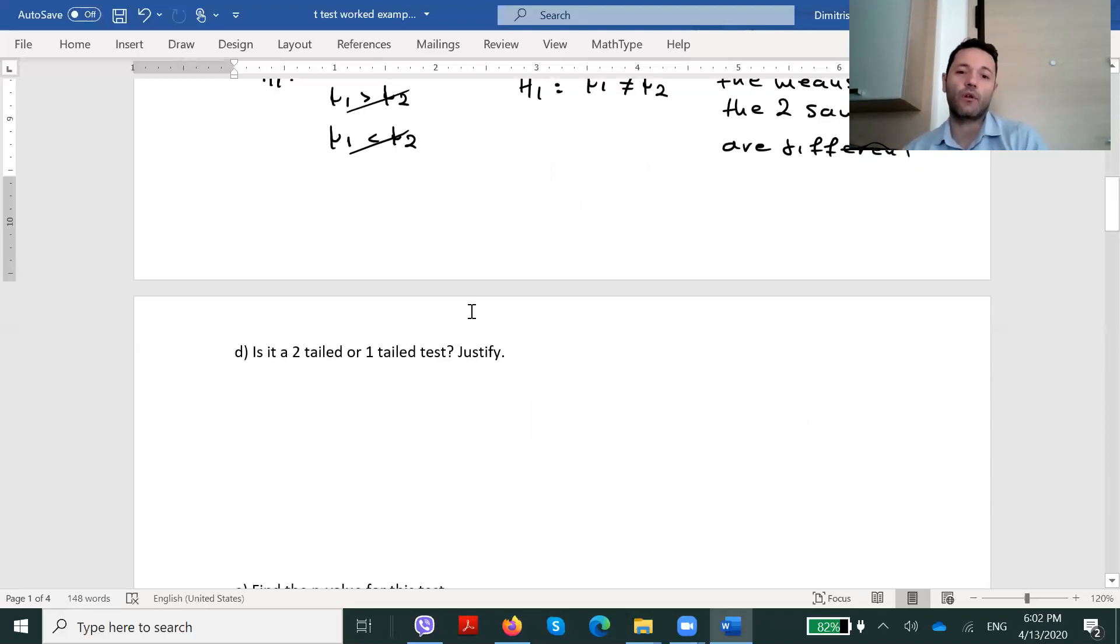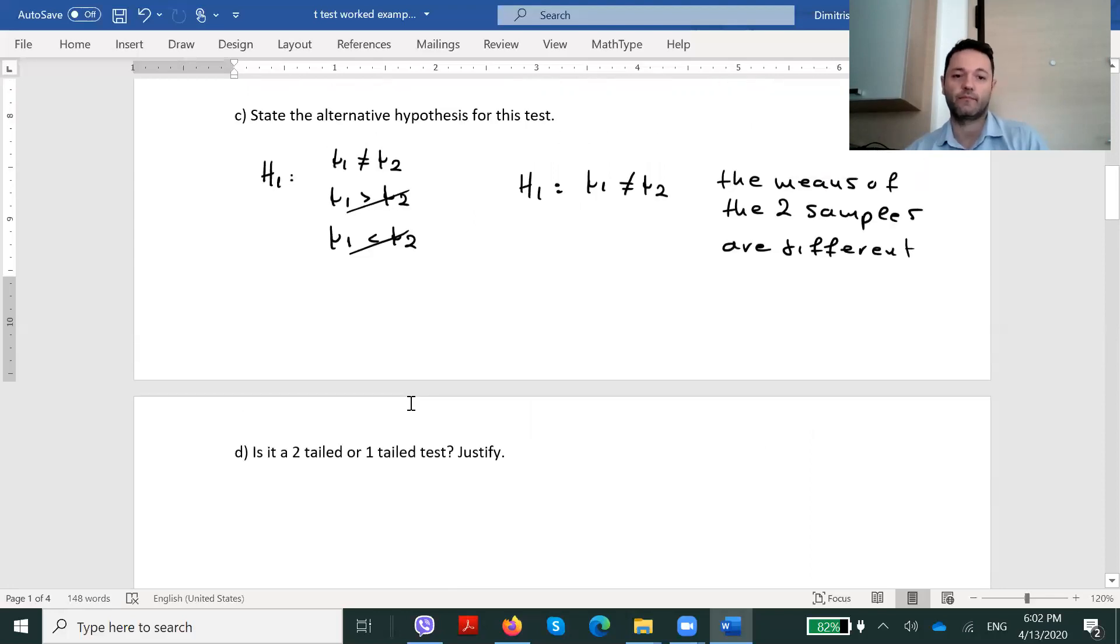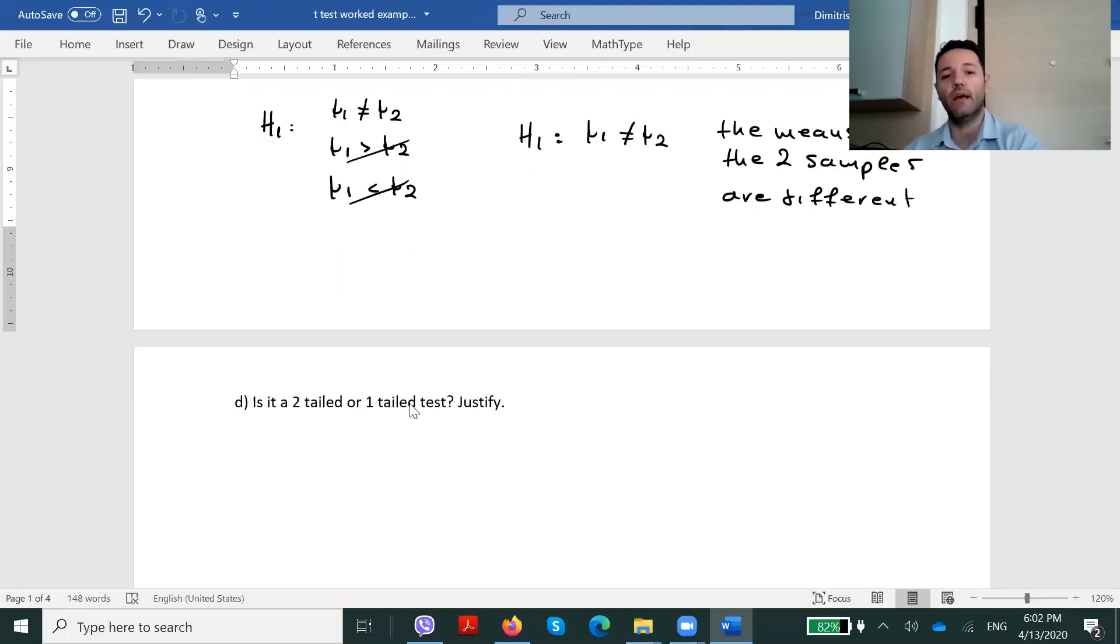Is it a two-tailed or a one-tailed test? Justify. This question is strongly related to the alternative hypothesis H₁. In H₁, we wrote that the two means are different, but this leaves us with two options. The mean of the first sample can either be greater or the mean of the second sample can be greater. This means that we have two choices and therefore it will be a two-tailed test. So, we would write as a justification from H₁, we get two choices, which means that it will be a two-tailed test.